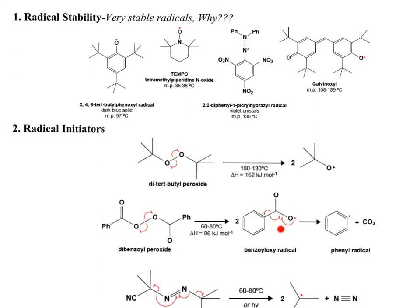This benzyloxy radical can break down further. There are some nice radical mechanism arrows where we actually make CO2 and a really reactive phenyl radical. Why is this phenyl radical really reactive? This radical - this electron can't do resonance; it's in an sp2 orbital. The driving force is losing CO2 as a gas, and that helps make that happen.